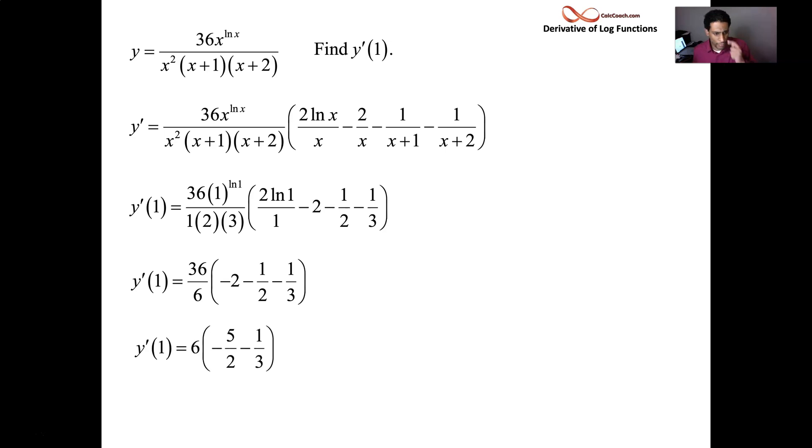And the first term is 6. We should distribute. Well, the minus 2 and the minus a half. They end up as minus 5 halves, like minus 4 halves and minus 1 half. You can put those two together nicely. The minus 5 halves and a minus 1 third. You can put those together too, but let's go ahead and distribute the 6. We'll have a negative 15 and a negative 2. The derivative at 1, negative 17.